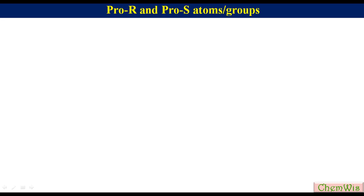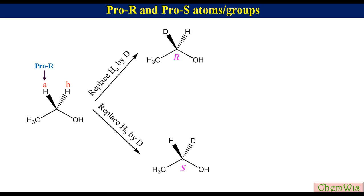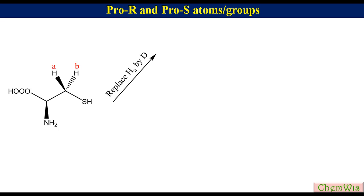Pro-R and Pro-S atoms or groups: an atom or group is said to be Pro-R if its replacement by a different group creates an R center. Similarly, an atom or group is said to be Pro-S if its replacement by a different group creates an S center. In ethanol, there are two hydrogen atoms HA and HB attached to the prochiral center. Replacement of HA with deuterium gives the R enantiomer, while replacement of HB gives the S enantiomer. So HA is Pro-R while HB is Pro-S. Similarly, in cysteine, replacement of HA with deuterium creates an R center while replacement of HB creates an S center.